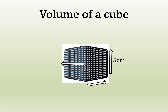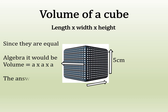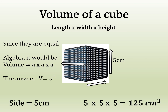For the volume of a cube, we use length times width times height. Since they're all equal, in algebra we say a times a times a, so the formula is volume equals a cubed. If our side was five centimetres, we'd say five times five, which is 25, times five again equals 125 centimetres cubed.